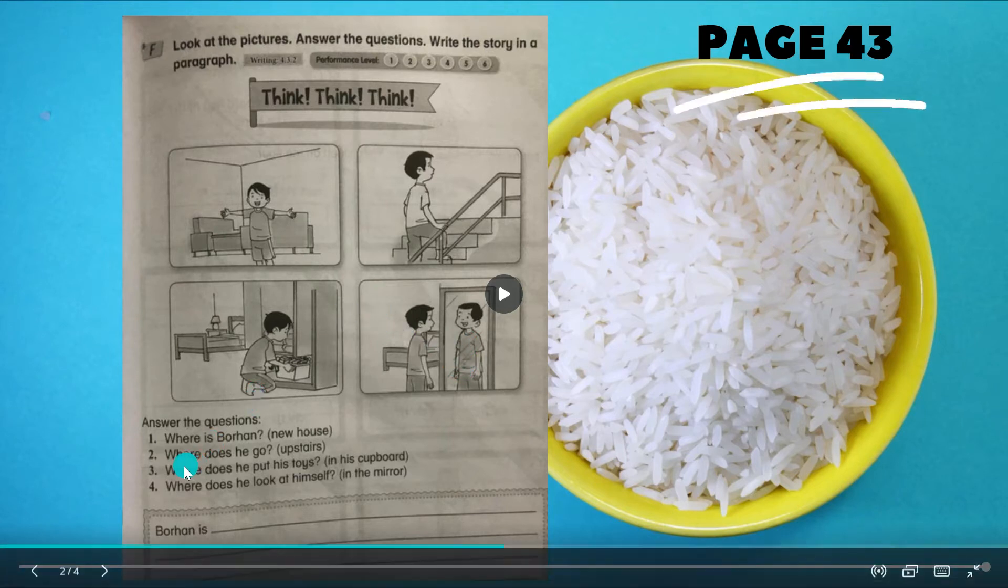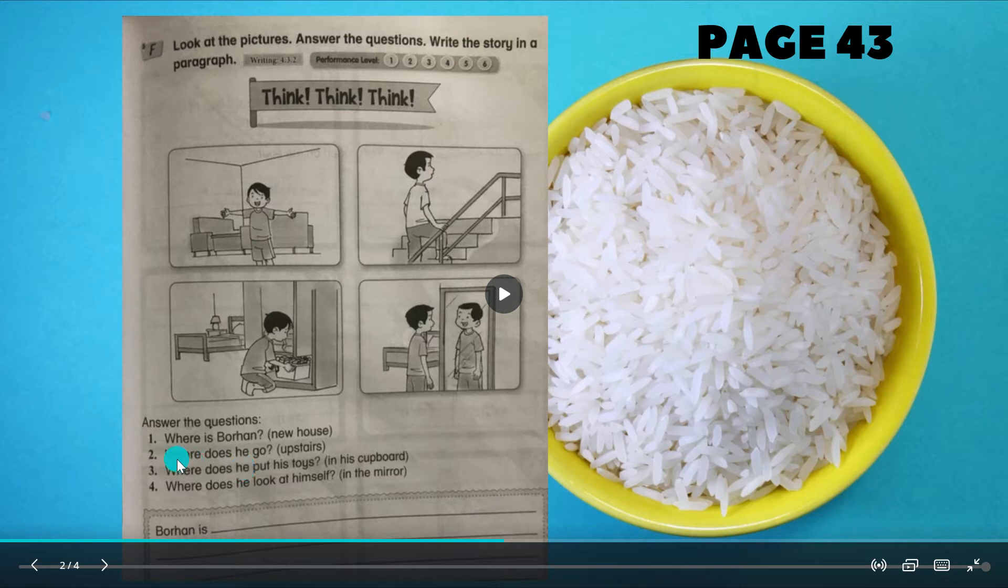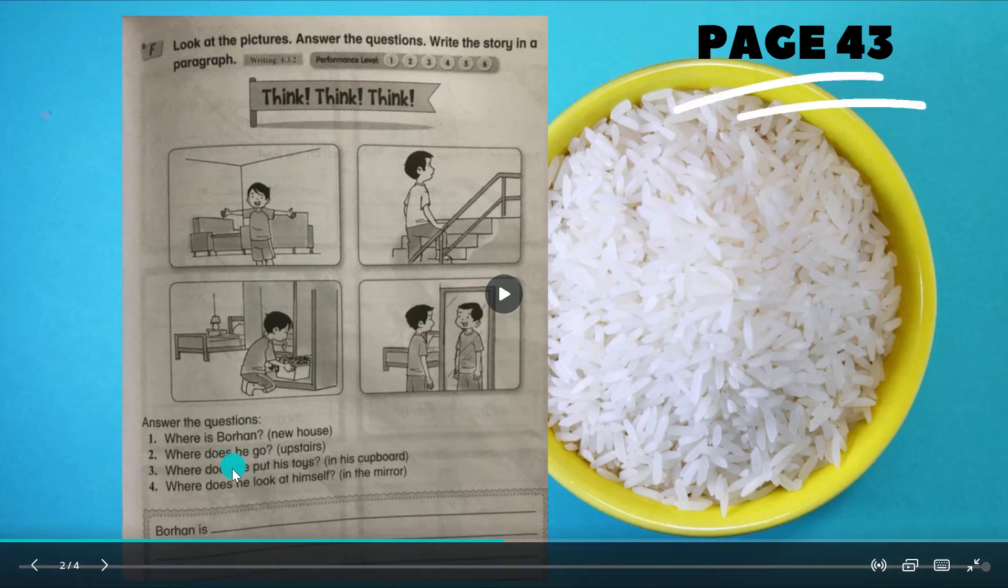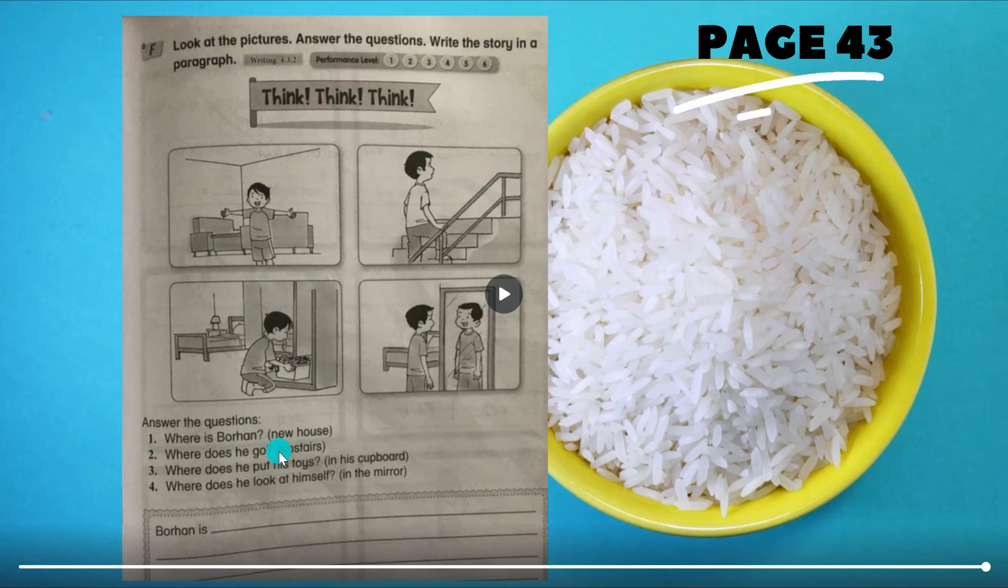Let's go to number one. Where is Borhan? Dia tanya where is Borhan and then dia bagi clue new house. So maksudnya borhan di rumah barunya. Macam mana kita nak jawab ayat penuh? The answer is: Borhan is in his new house.